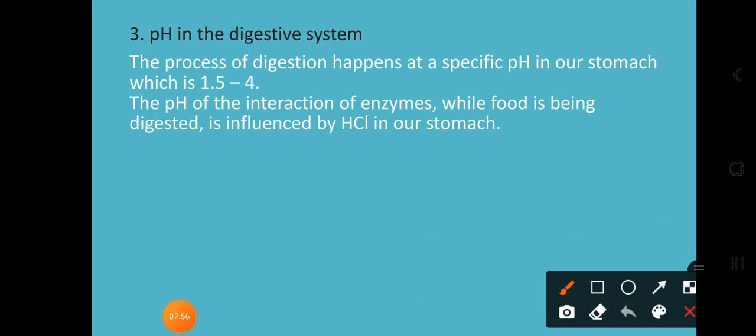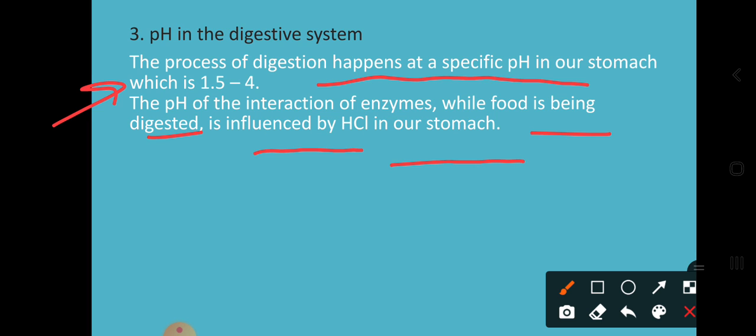The next application of pH is in the digestive system. The process of digestion happens at a specific pH in our stomach, which is around 1.5 to 4. The interaction of enzymes while food is digested is influenced by HCl in our stomach. Our stomach produces HCl, which kills harmful bacteria that come with our food. So HCl is present in our stomach; it is inorganic but found in our body.